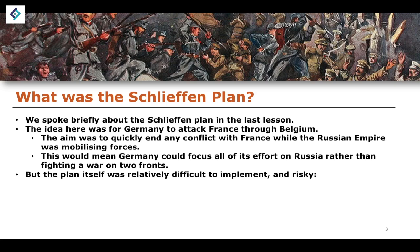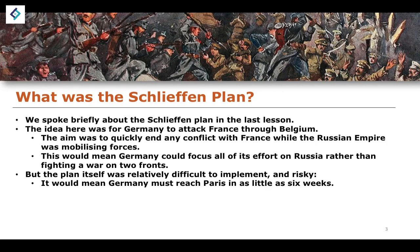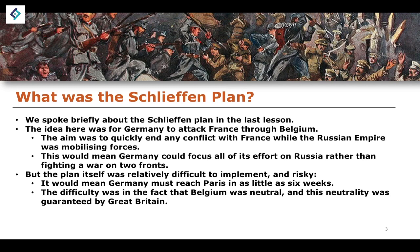In reality, the Schlieffen Plan was very difficult and risky to implement. It would require Germany to reach Paris in as little as six weeks, cutting through Belgium as quickly as possible. There was also the difficulty that Belgium was a neutral state, and that neutrality was guaranteed by Great Britain. An ultimatum was in place: if Germany attacked neutral Belgium, Britain would enter the conflict on the side of France and Russia, making things even more complicated on the Western Front.